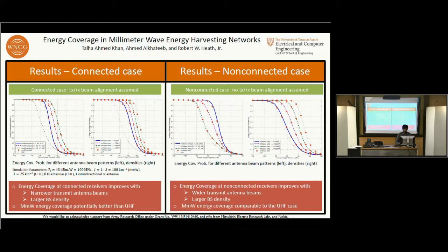Here are the results for the energy coverage probability for the connected and non-connected cases. On your left, we have plotted the energy coverage probability for different antenna beam patterns. You can see that the energy coverage probability increases with narrower beams. This is because of higher beamforming gains that a receiver experiences.